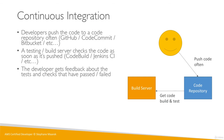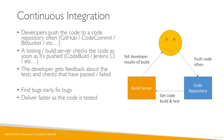To complete the loop, the developer gets feedback about the tests and checks that have passed or failed. The build server comes back to us — maybe with an email, maybe with a UI you can look at — and the developer can get the results of the build. The developer can spend more time creating code and pushing often, while the build server does the work of checking what's happening. The goal is to find bugs early and fix them early, to deliver faster as code is tested continuously, to deploy often, and to make developers happier as they're unblocked in their workflow. Continuous integration overall is going to increase your productivity by a lot.